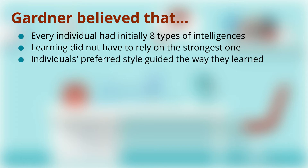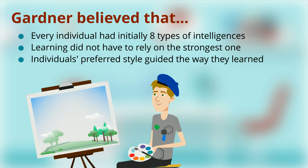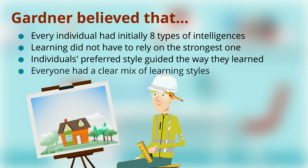Hence, an individual's preferred style guided the way they learned. An example would be the following: if someone was a skilled artist with high visual-spatial intelligence, it did not necessarily mean they would not benefit from logical-mathematical intelligence to help them express their art. Gardner clearly recognized that everyone had a mix of learning styles, and they could be used differently according to varying circumstances.